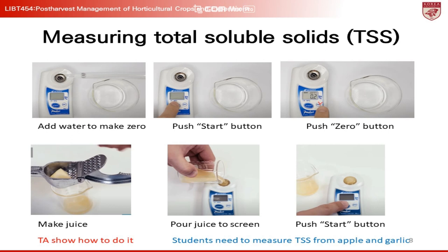This step compensates for any background solution and ensures accuracy in your subsequent measurements. After calibration, you're ready to measure your actual sample. Thoroughly clean the prism surface to remove the water used for calibration. Then, place a few drops of the juice or solution you're testing onto the prism, close the cover plate, and press the Start button. The refractometer will display the TSS in degrees Brix, which is a scale that indicates the amount of sucrose or soluble solids present in 100 grams of solution.